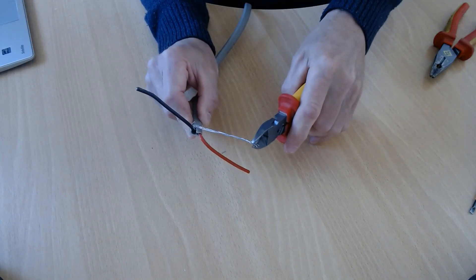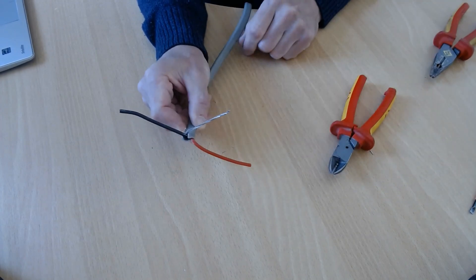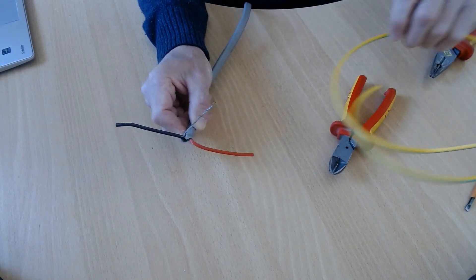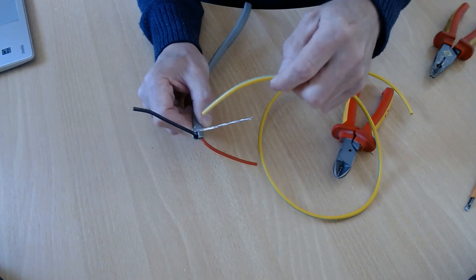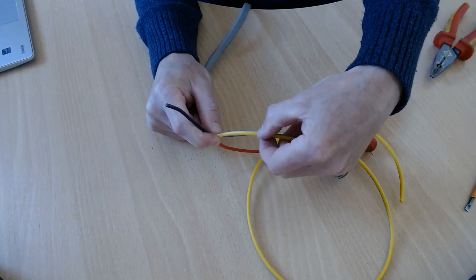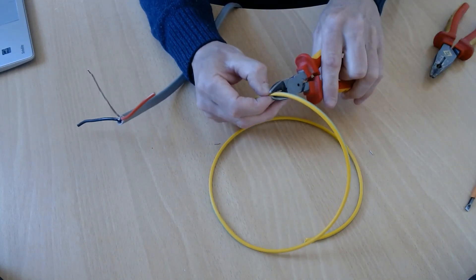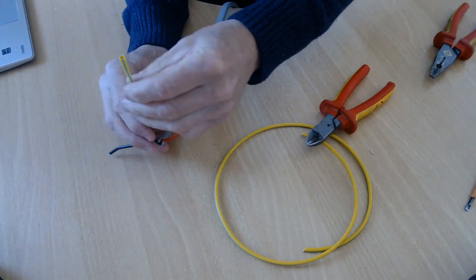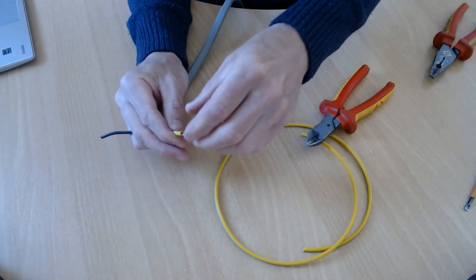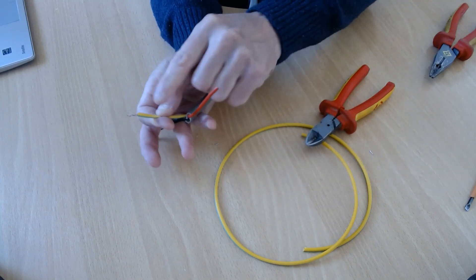Cut off if there's any longer than the others. You don't have to go mad twisting it. Get your earth sleeving, put it on, measure it out to about there, then cut it off and put the earth sleeving on there so you've got a piece of the earth sticking out.